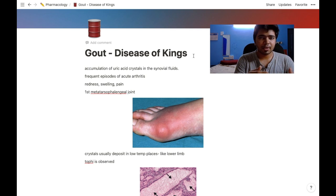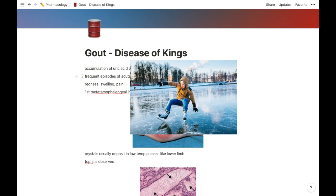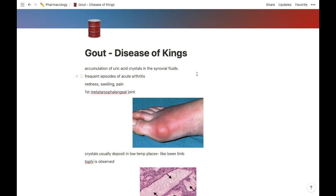These low temperatures are observed in the lower limbs and joints. Uric acid goes and crystallizes in the synovial fluids present in the joints. After crystallizing, it increases the friction in the joint and causes rubbing of these bones together.